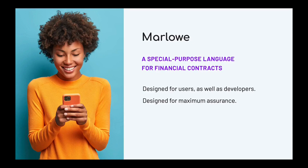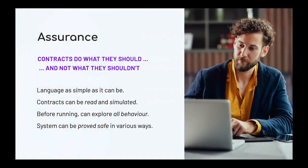Working in this more specialised context gives us the advantage of being able to give people better feedback, better error messages, but also more guarantees on program behaviour. We can make sure that contracts do what they're supposed to do, but we can also make sure they don't do what they shouldn't. We'll see both aspects of that as we go along.